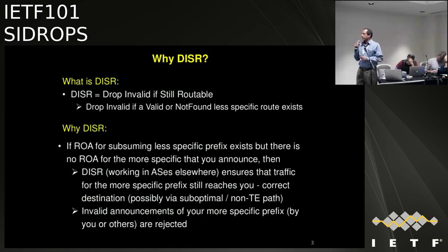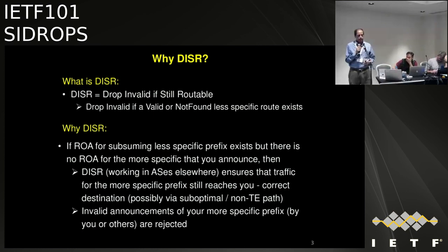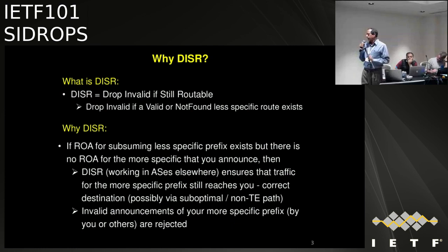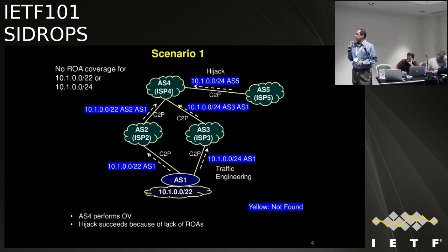DISR: drop invalid if a valid or not-found less-specific route exists. Why do you want to do that? If there's a ROA for the subsuming less-specific that exists, you are dropping the invalids and routing them towards a less-specific that is either valid or not-found. The invalid announcements — some could be hijacks, some could be due to traffic engineering — are all dropped. What we try to ensure is that traffic for the more specific does get to its intended destination.